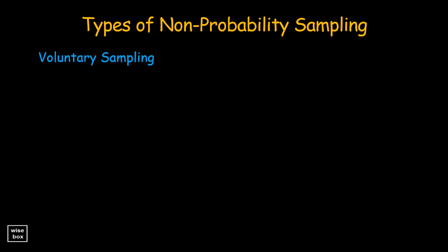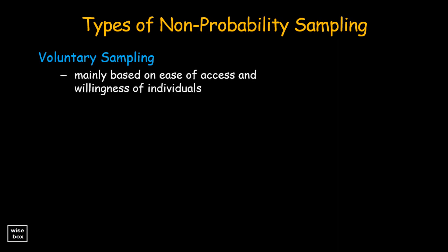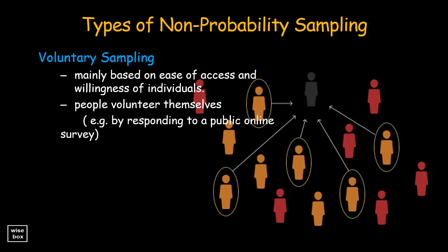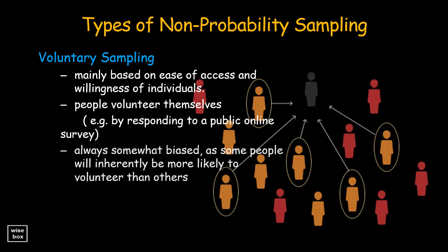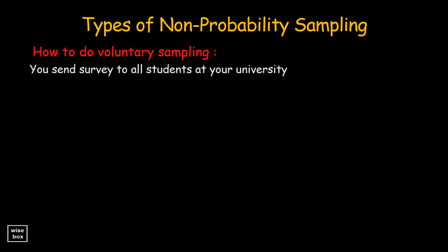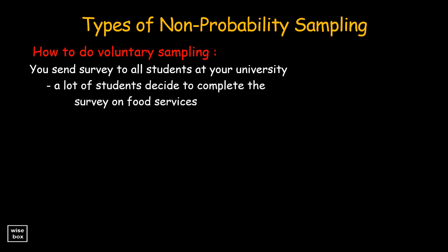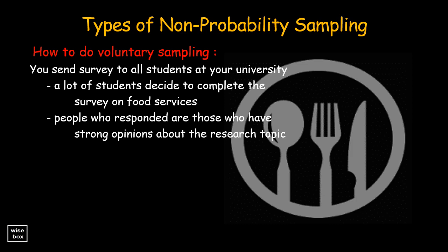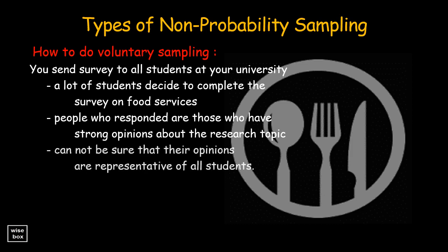Similar to a convenience sample, voluntary response sampling is mainly based on ease of access and willingness of individuals. Instead of the researcher choosing and directly contacting participants, people volunteer themselves — for example, by responding to a public online survey. Voluntary response samples are always at least somewhat biased, as some people will inherently be more likely to volunteer than others. For example, if you send out a survey to all students at your university and many decide to complete it, the people who respond are more likely to have strong opinions about the topic, so you can't be sure their opinions are representative of all students.